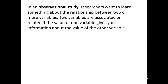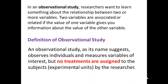An observational study, as its name suggests, observes individuals and measures variables of interest, but no treatments are assigned to the subjects or experimental units by the researcher. Researchers use a variety of terms to describe who exactly is being measured. The generic term 'unit' is used to indicate a single individual or object being measured. When the units are people, they are usually called subjects or participants.